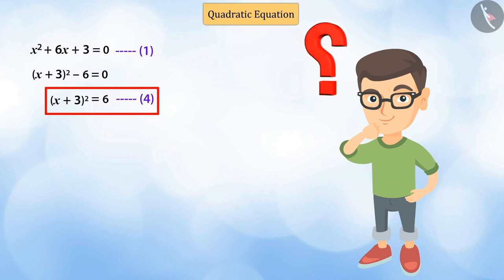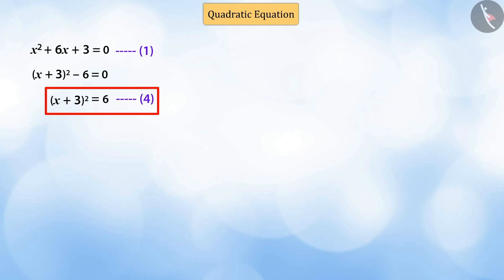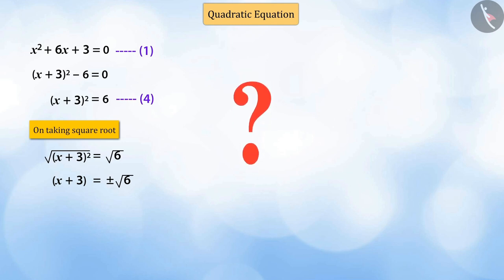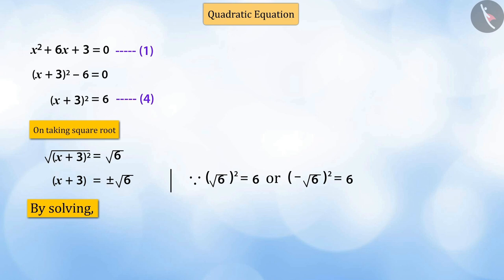Can you now find the value of x by solving equation 4? Well done! If we take the square roots of both sides of equation 4, we get x plus 3, which is equal to plus minus root 6. Can you tell me, why didn't we just consider positive root 6? That's because the square of both positive root 6 and negative root 6 is 6. Therefore, on solving the roots of the equation, x is equal to minus 3 plus square root of 6 and x is also equal to minus 3 minus square root of 6.